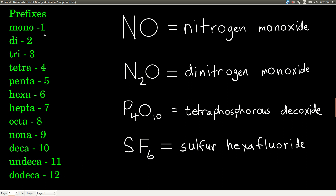If there's only one atom of the first element in the molecule, then we don't put a mono in front of the first element's name. Otherwise, we use mono for the second element and all the other prefixes for the first. So for this compound, both elements are non-metals — nitrogen and oxygen. There's one of each; we don't put a mono in front of the nitrogen, but we do for the oxygen. So we just say nitrogen monoxide.